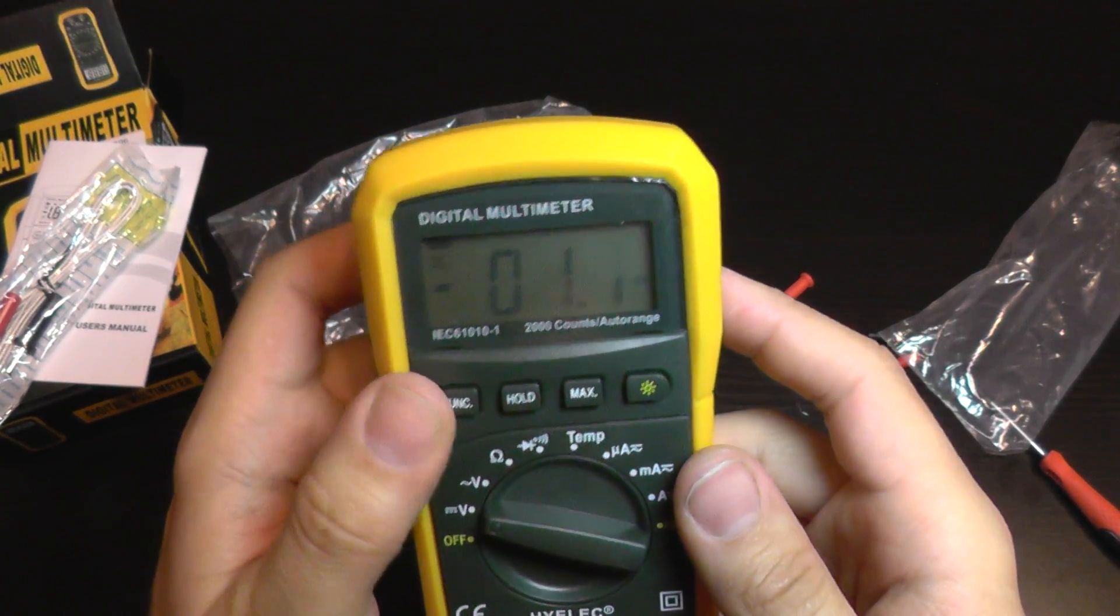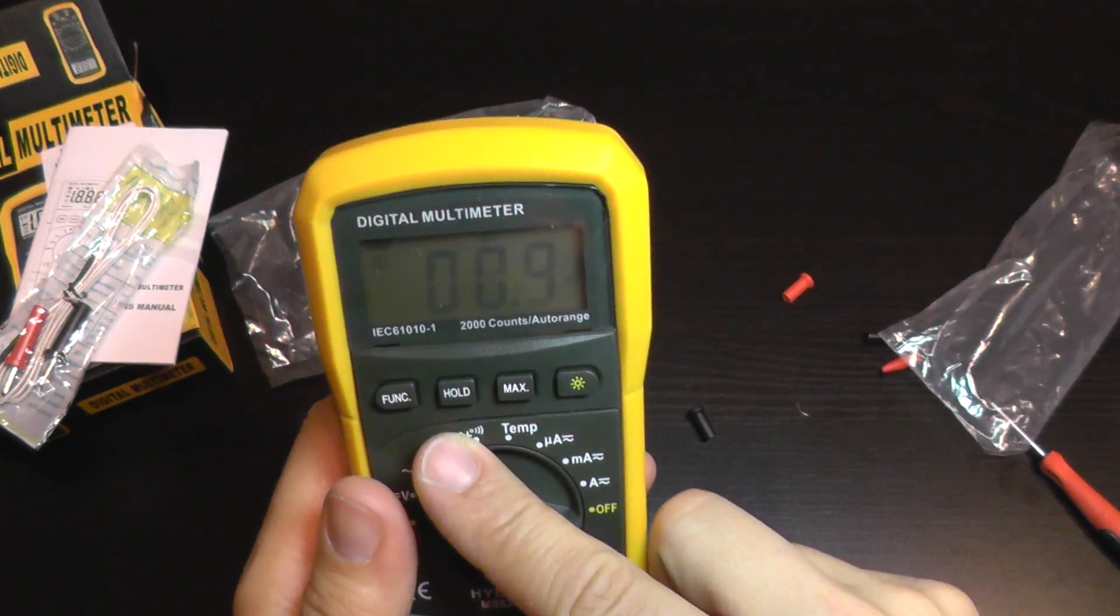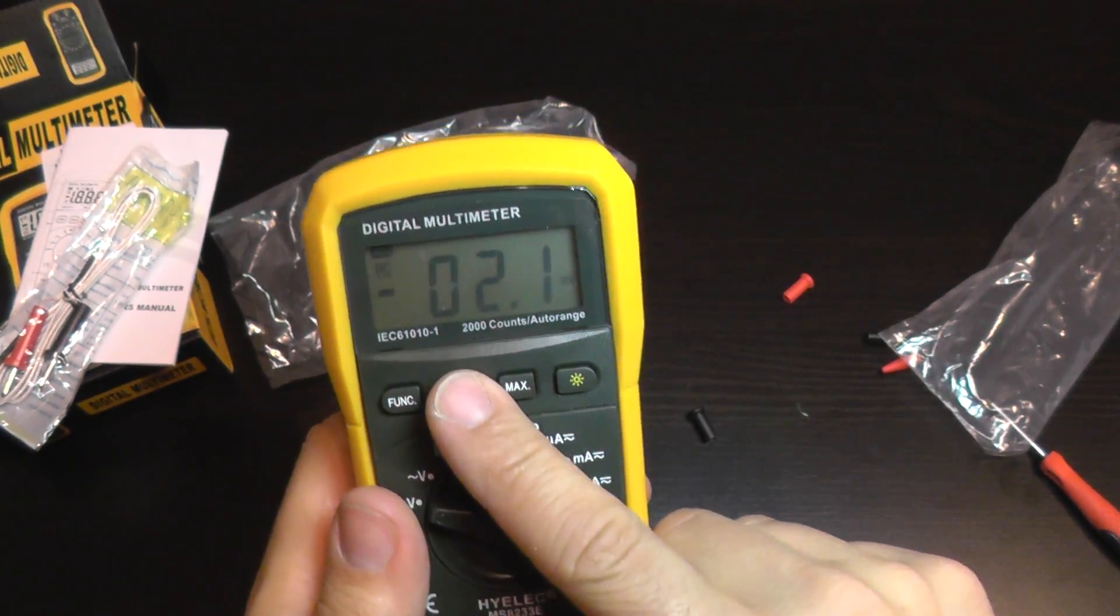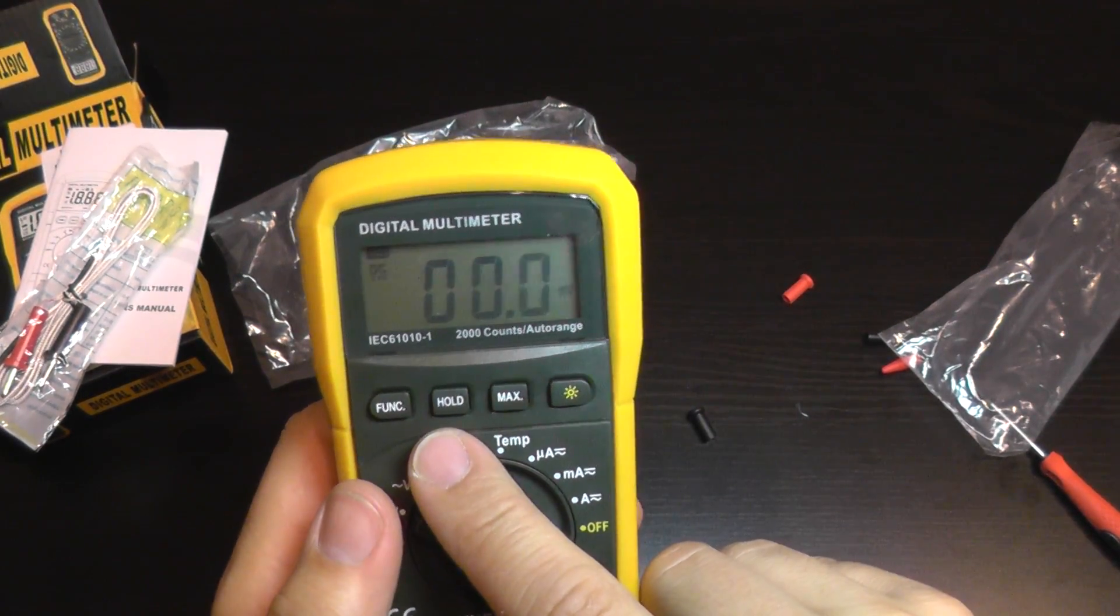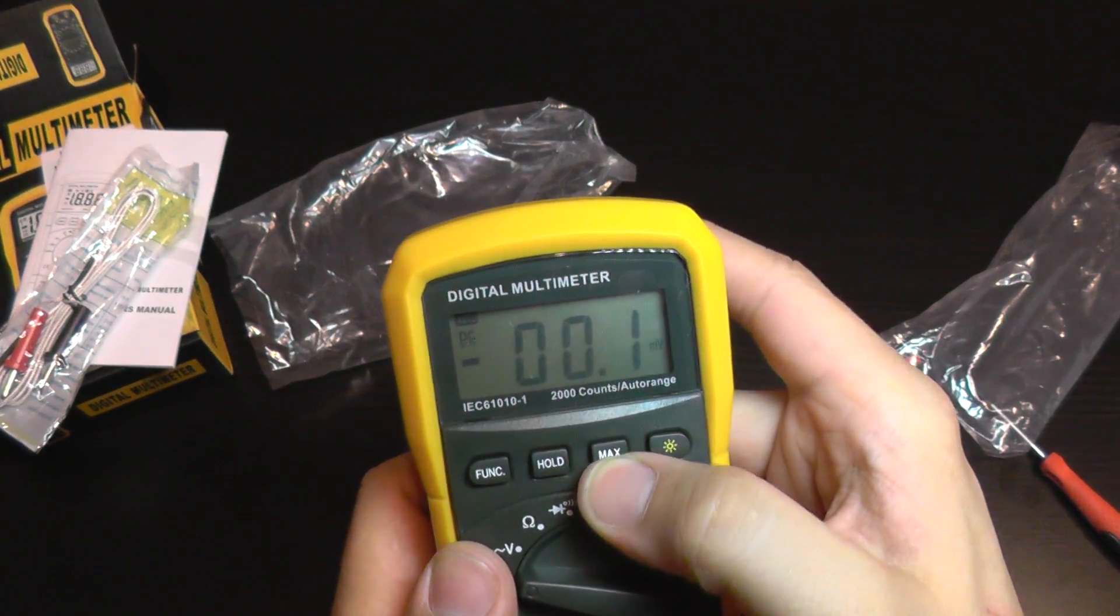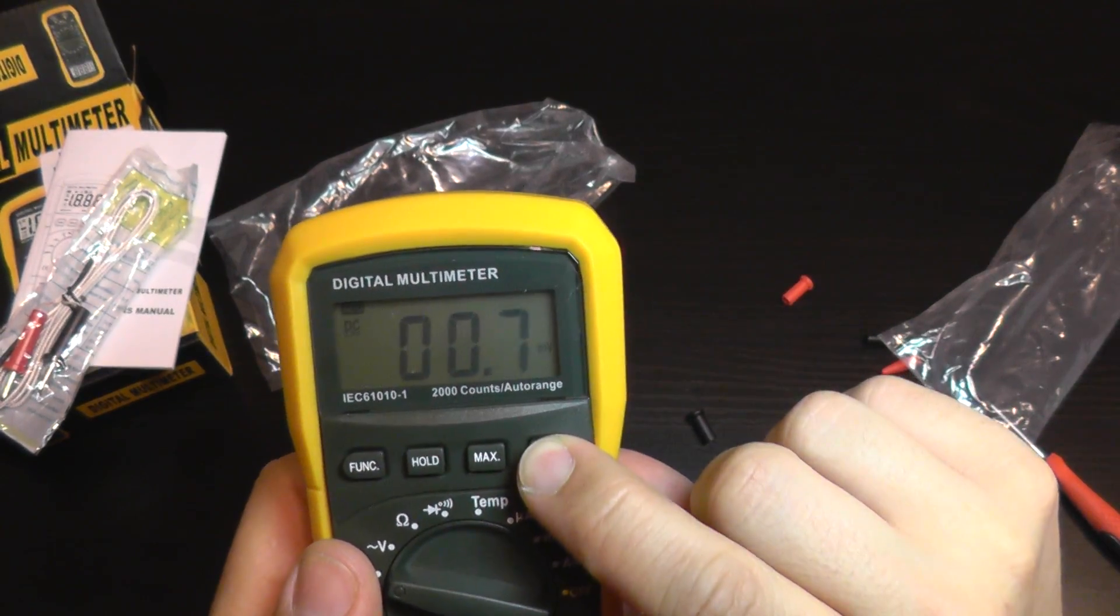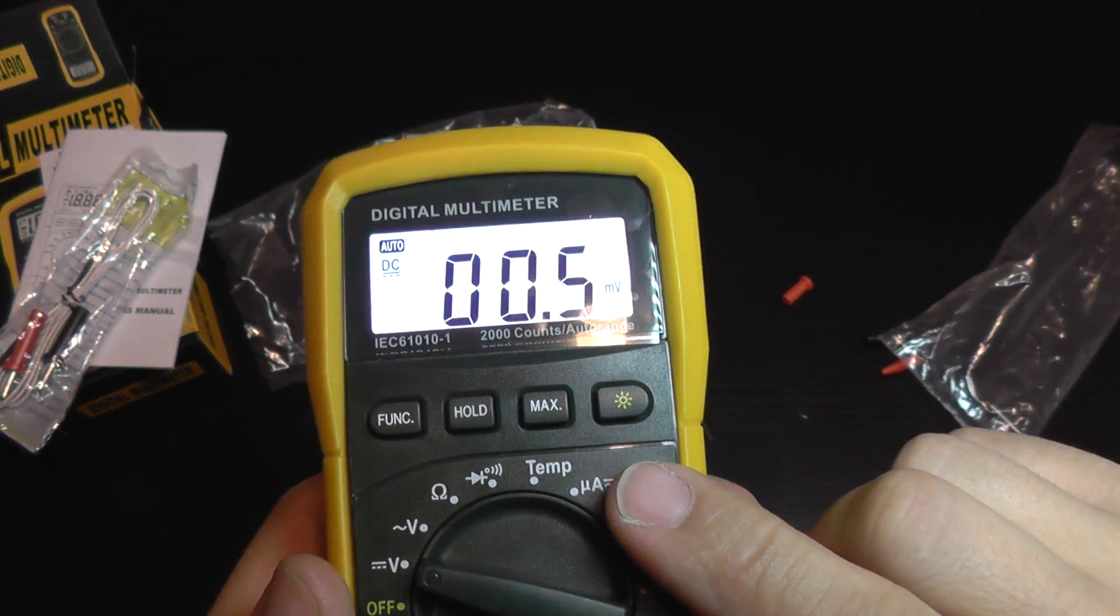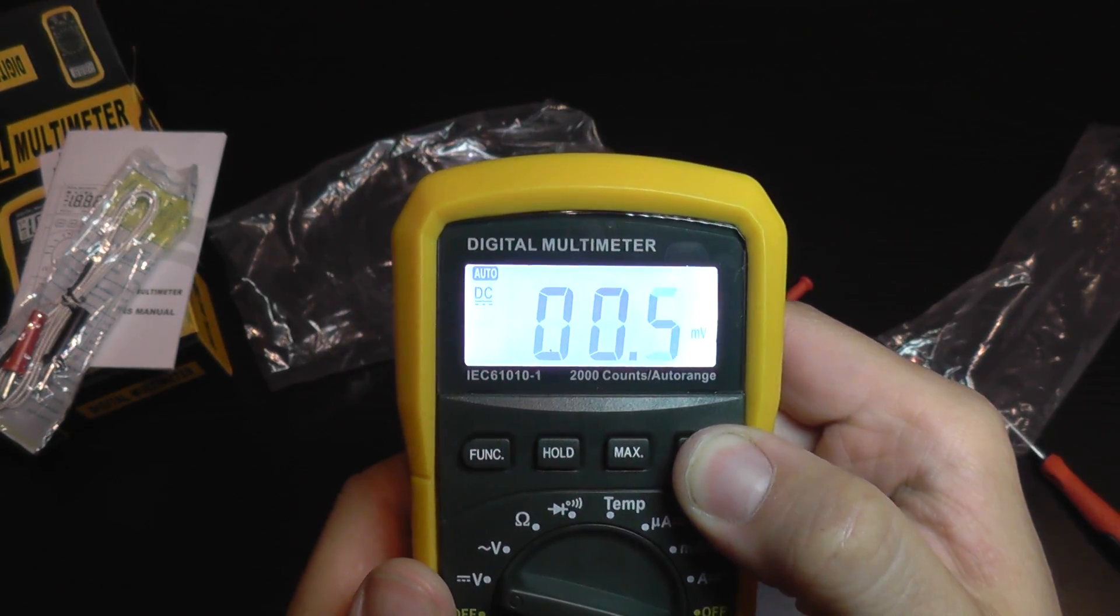It also has some other buttons here. This is the hold button which will freeze the measurement. This will memorize the maximum value of the measurement. And we also get this cool white backlight.